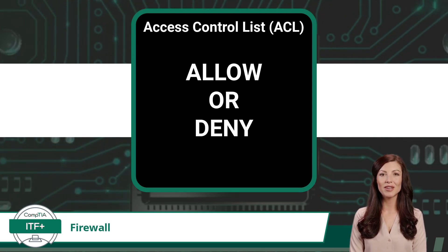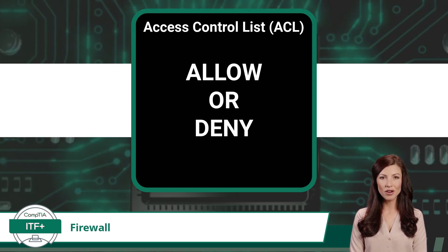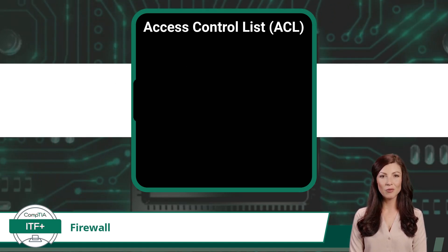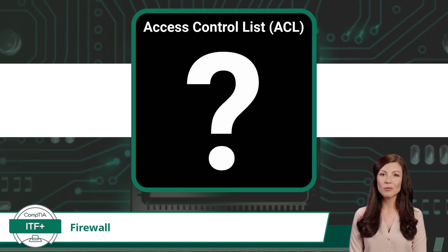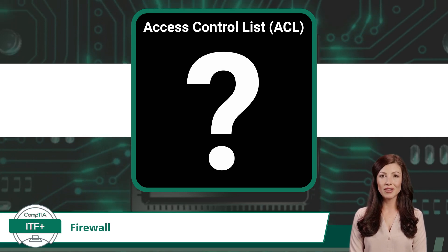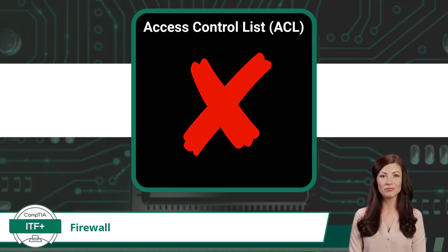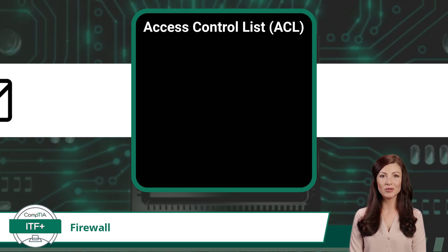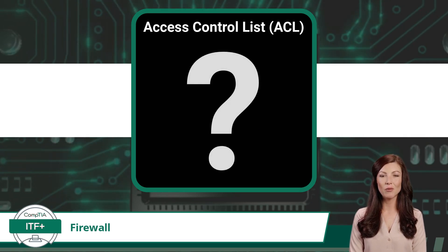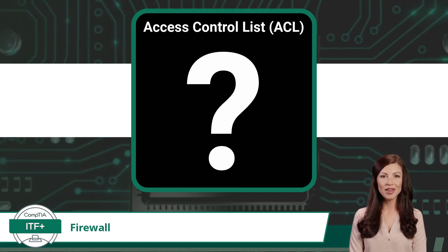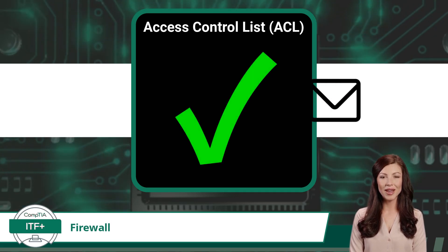Access control lists are essentially a set of rules that dictate what types of network traffic are permitted and what types should be blocked. As a data packet is received by a network firewall, the firewall will compare the data packet against the security rules listed in its access control list. If the data packet does not match any of the allow rules, the data packet will be denied, and the next packet can be processed. If the data packet matches an allow rule in the access control list, the data packet will be permitted and forwarded on.